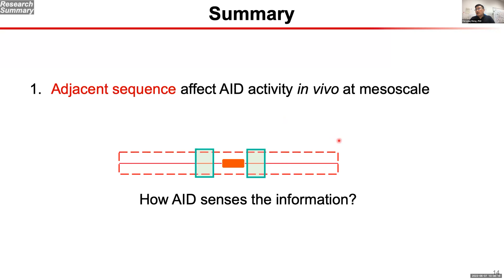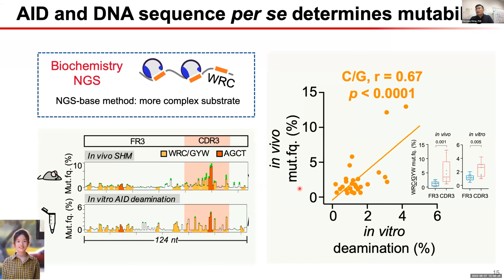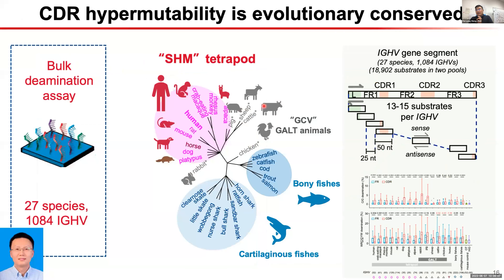Our question was how AID can sense this information, since it is a really small protein. About three years ago, my student Yan Yan set up high-throughput biochemistry assays — NGS-based deamination assays — to try to answer this question. With this assay, we can put very complex substrates into the deamination assay. Surprisingly, it recapitulated the CDR hypermutability features in vitro, suggesting that only this enzyme and the DNA sequence together can determine this process.